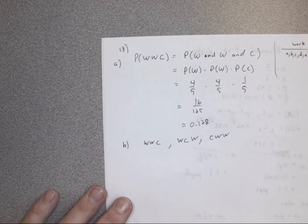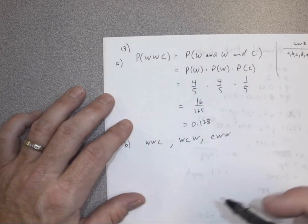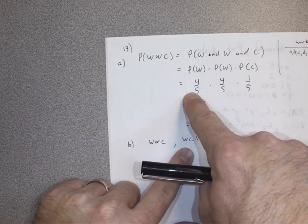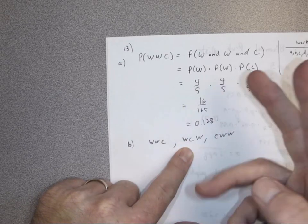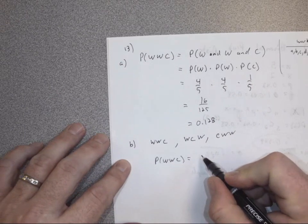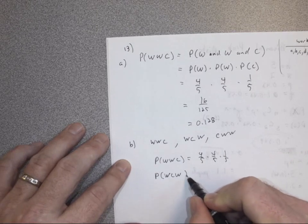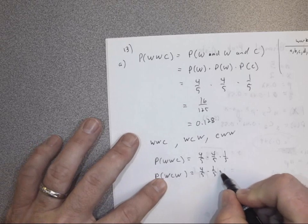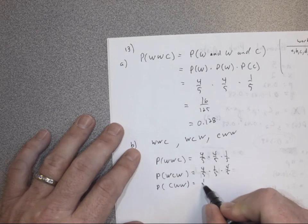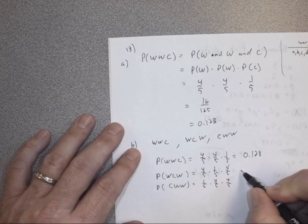The probability of wrong-wrong-correct should be the same as the probability of wrong-correct-wrong because we're multiplying — the order doesn't matter. P(wrong, wrong, correct) = 4/5 × 4/5 × 1/5; P(wrong, correct, wrong) = 4/5 × 1/5 × 4/5; P(correct, wrong, wrong) = 1/5 × 4/5 × 4/5. Since multiplication is commutative, these answers are all the same.